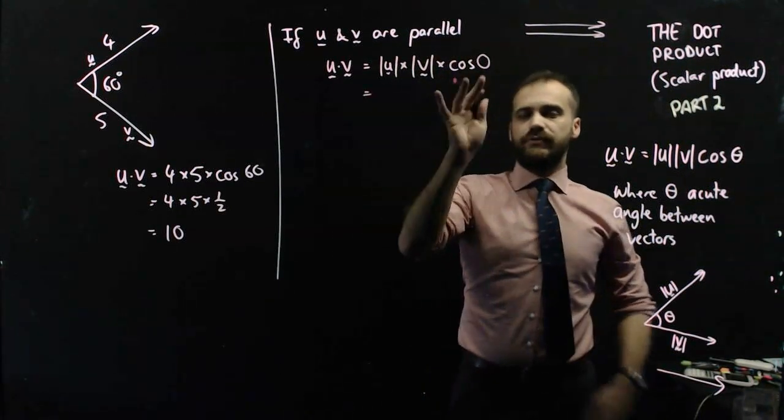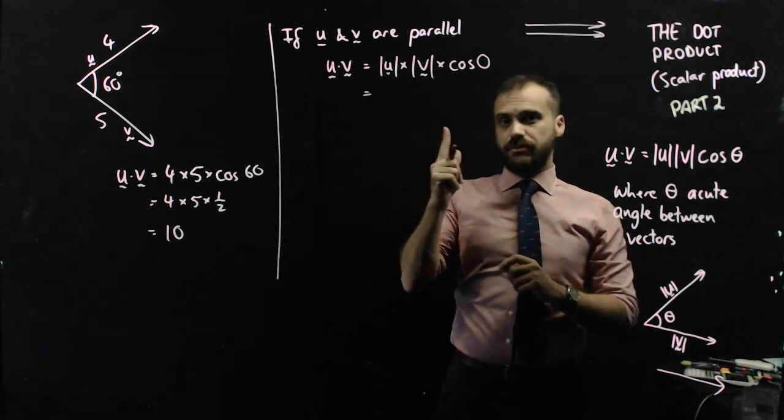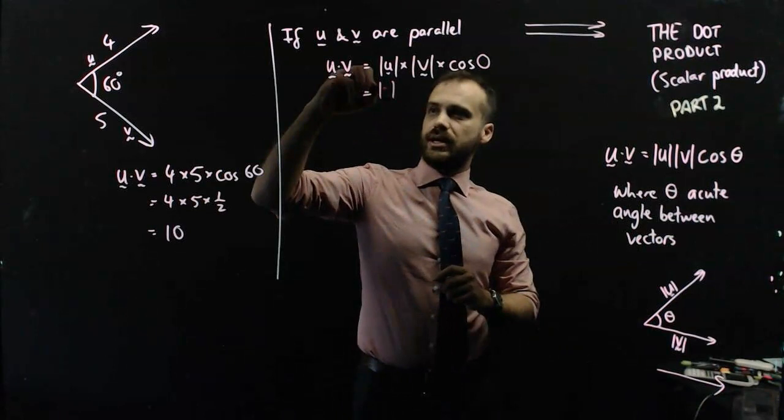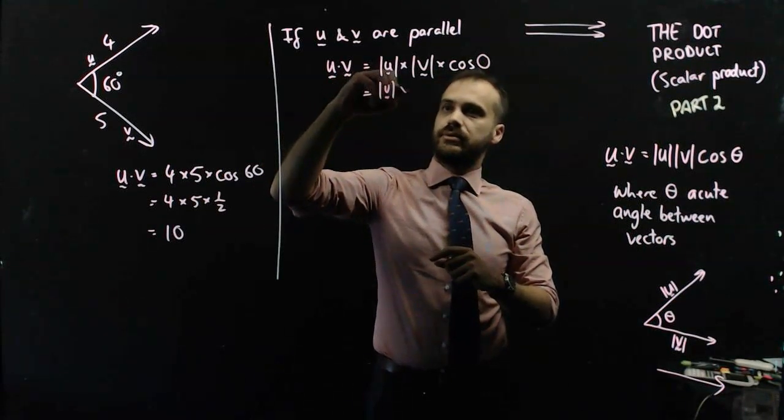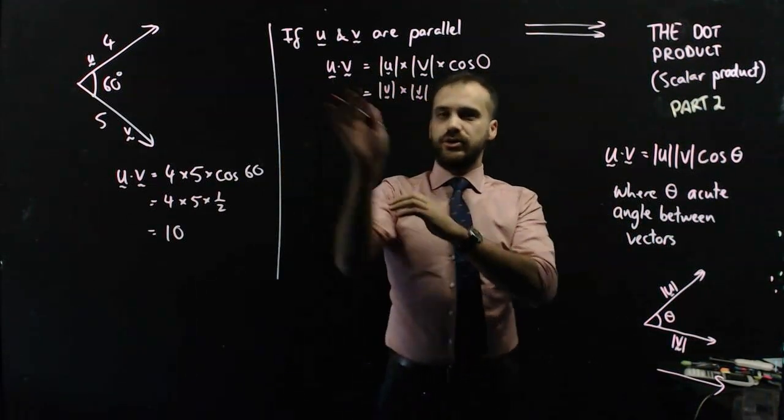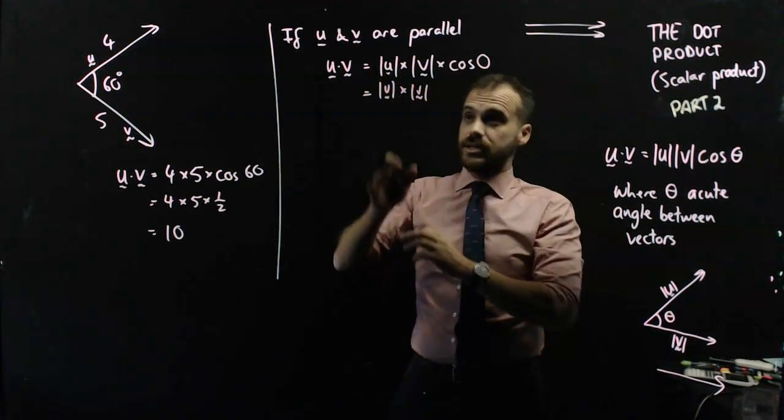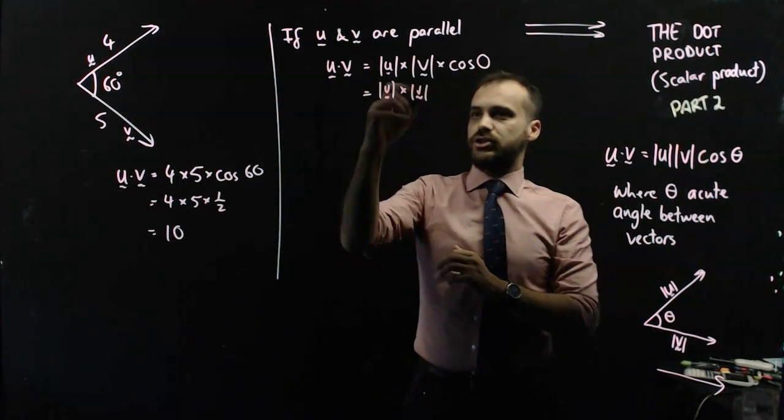Now, if you put cos 0 into your calculator, you'll get the number 1, which means that u dot v for parallel vectors times 1, which means that u dot v for parallel vectors is just the magnitude of u times the magnitude of v.